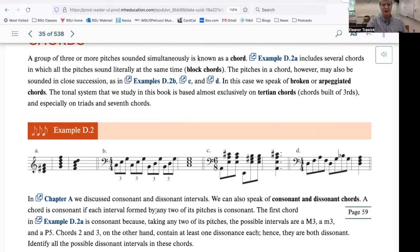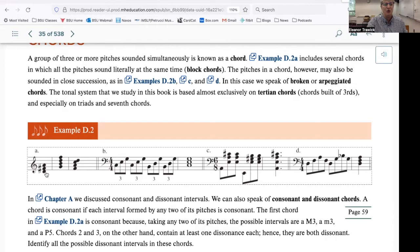One more term that I'd like to introduce you to using Example D.2 are the terms consonant and dissonant. Just as intervals can be consonant and dissonant, so can chords be consonant and dissonant. A consonant chord includes all consonant intervals. So this D major chord here at the start of Example D.2a is a consonant chord. It has a major third, D to F sharp, a minor third, F sharp to A, and a perfect fifth, D to A. All major and minor triads are consonant chords, because they have major and minor thirds and a perfect fifth.